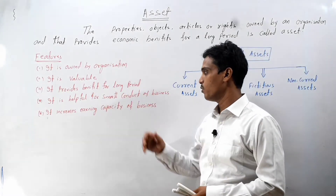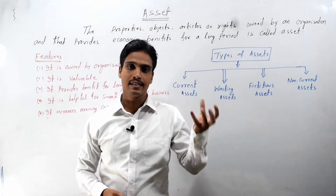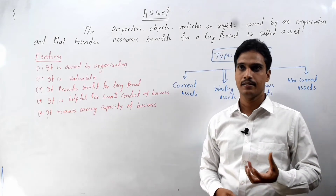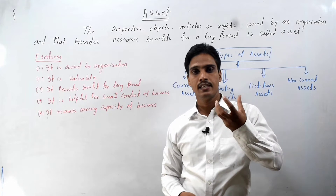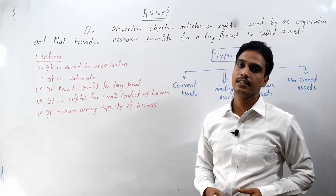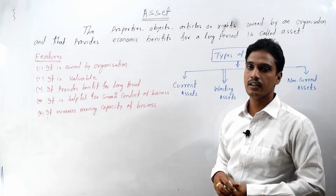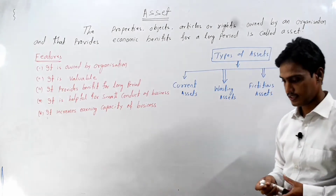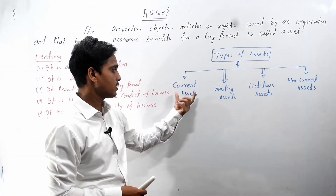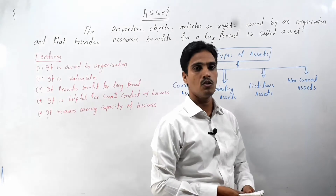An asset is an article or property that provides benefit to the organization, is valuable, increases the earning capacity of the business, and also requires huge investment. Assets are broadly divided into four traditional types: current asset, wasting asset, fictitious asset, and non-current asset.